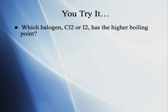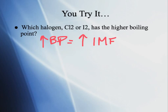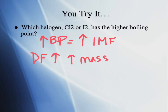Dispersion force increases with increasing atomic mass. We have to figure out which is heavier and has more electron clouds — chlorine or iodine. Looking at the periodic table, iodine is below chlorine, so iodine has one more shell of electrons. That extra shell creates stronger dispersion forces, giving iodine a slightly higher boiling point than chlorine.